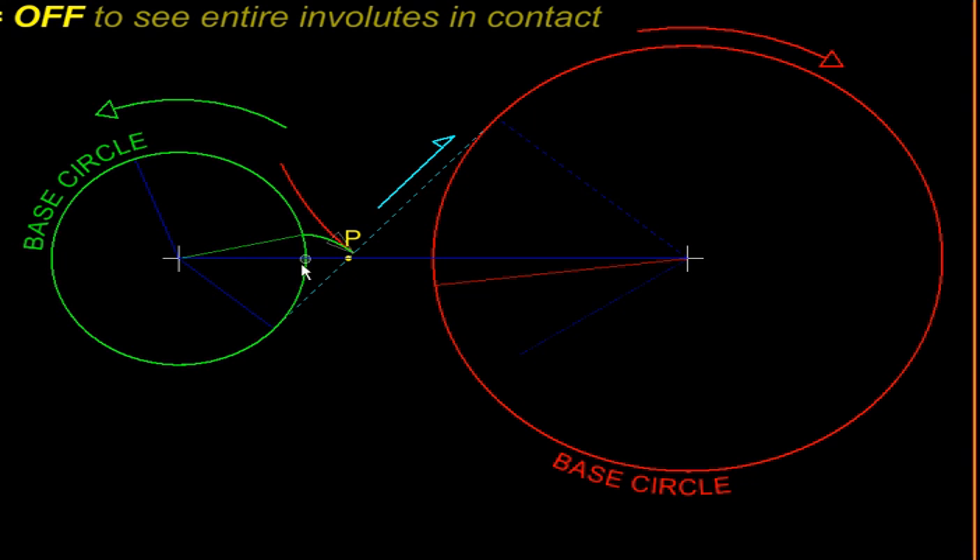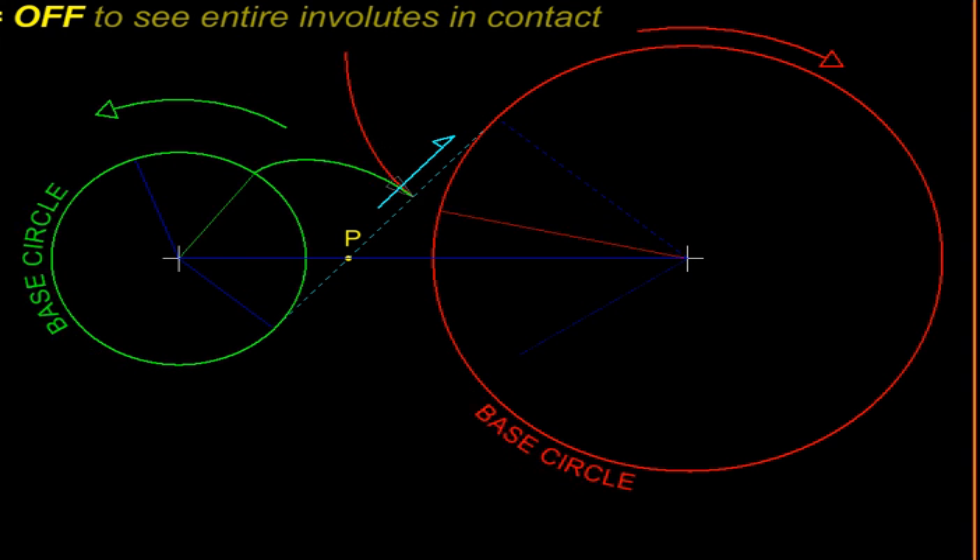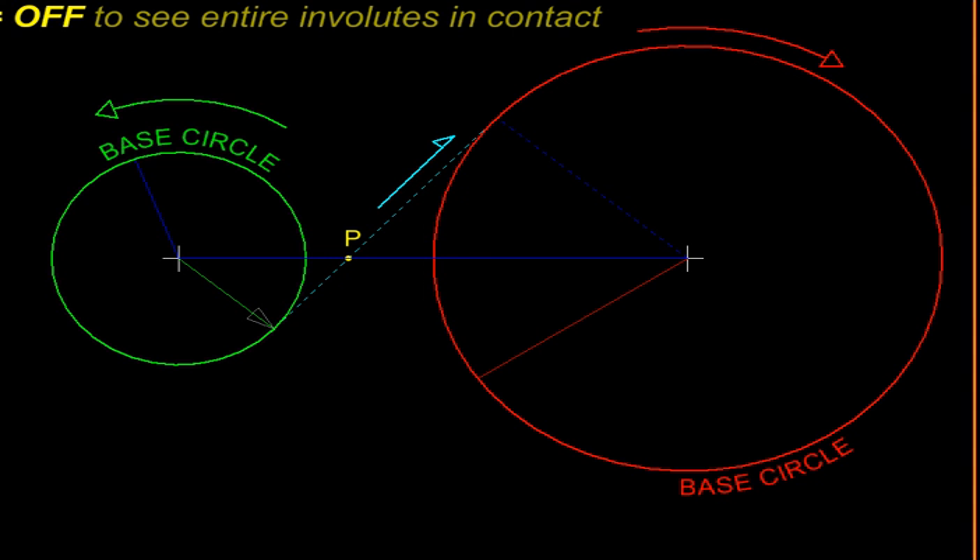Lastly, an observation we can make: as the two involutes are generated, their lengths are not equal. The red one is growing very fast, and therefore it will slide past the green involute, so there will be sliding. At a later stage, the green one is growing faster than the red, so that will slide past the red profile, and therefore there will be sliding all the time.